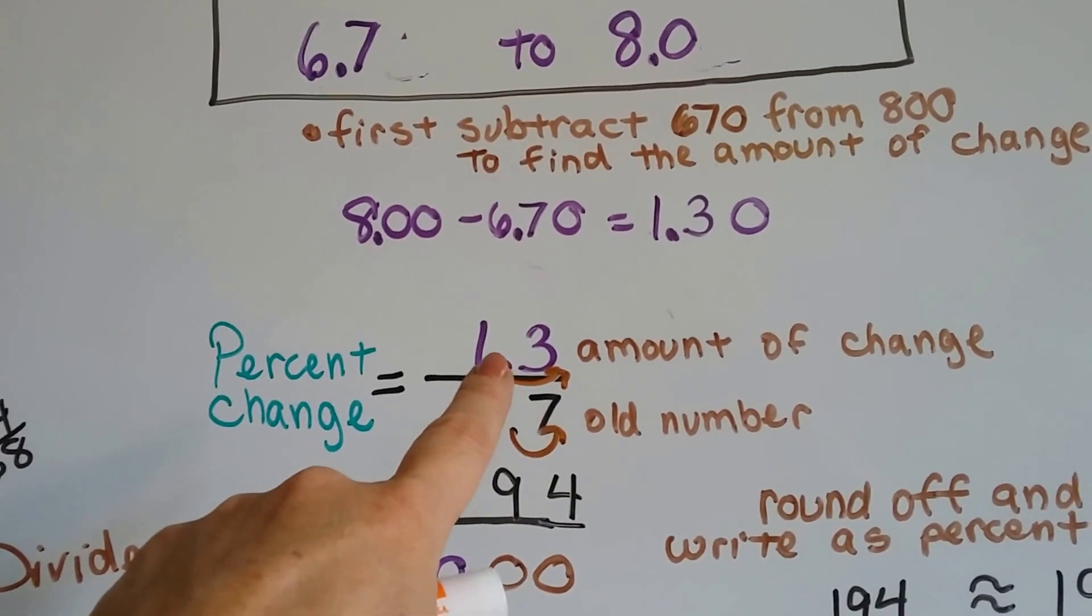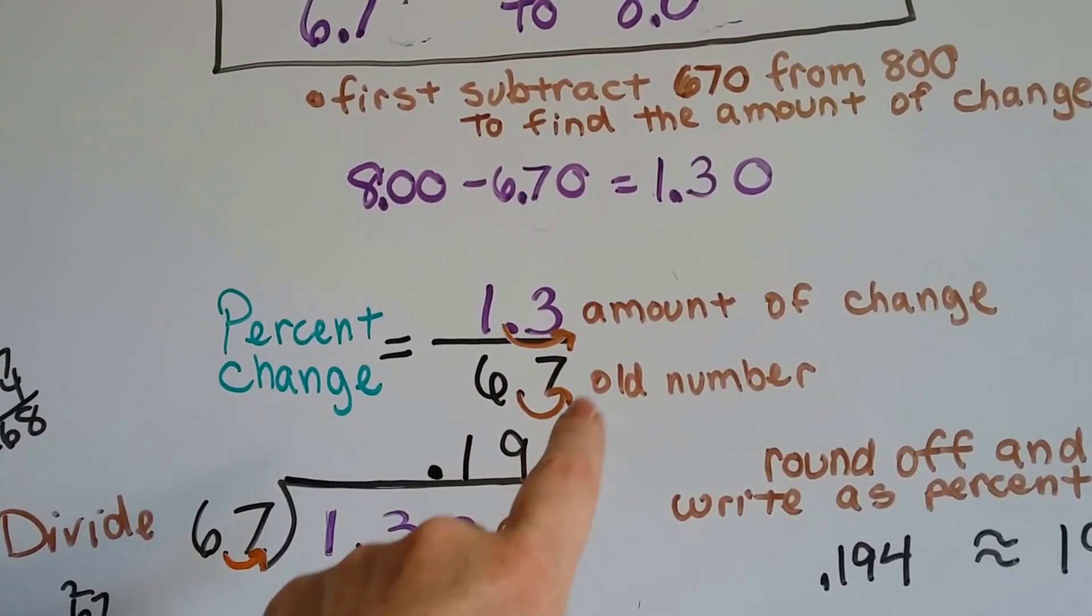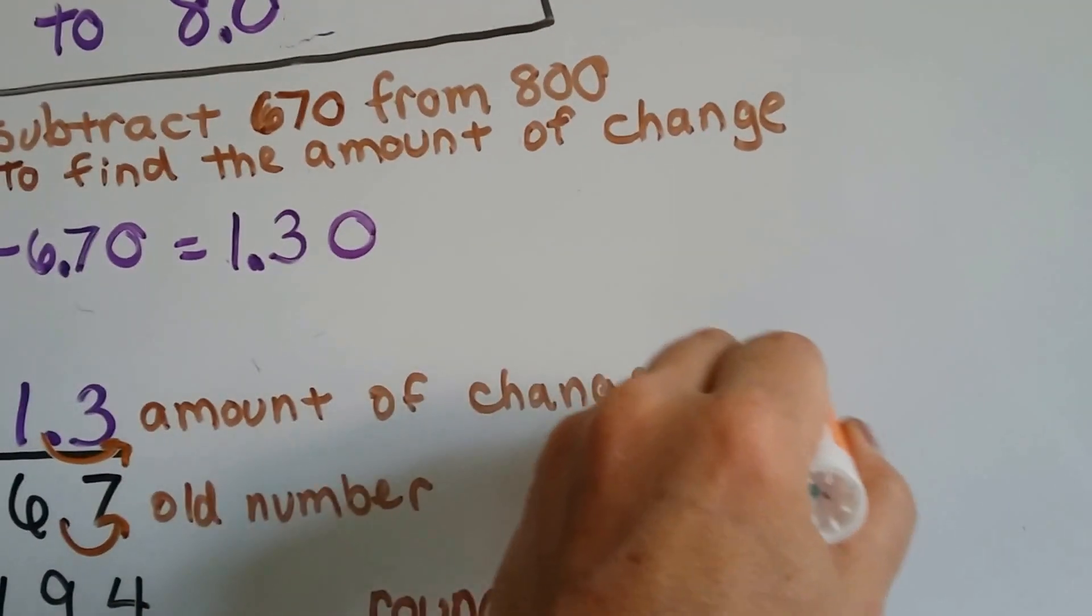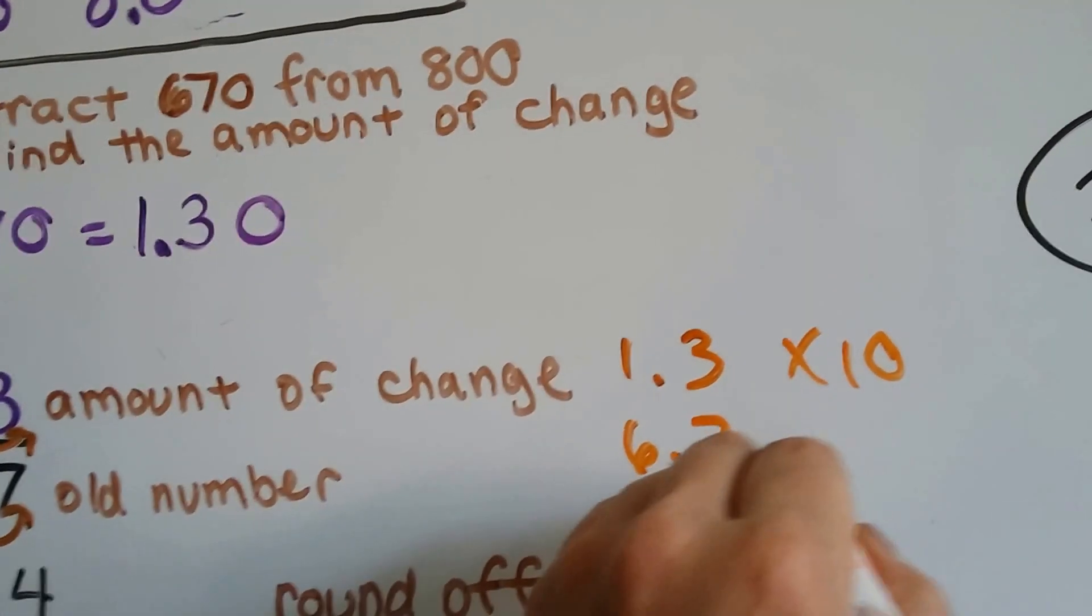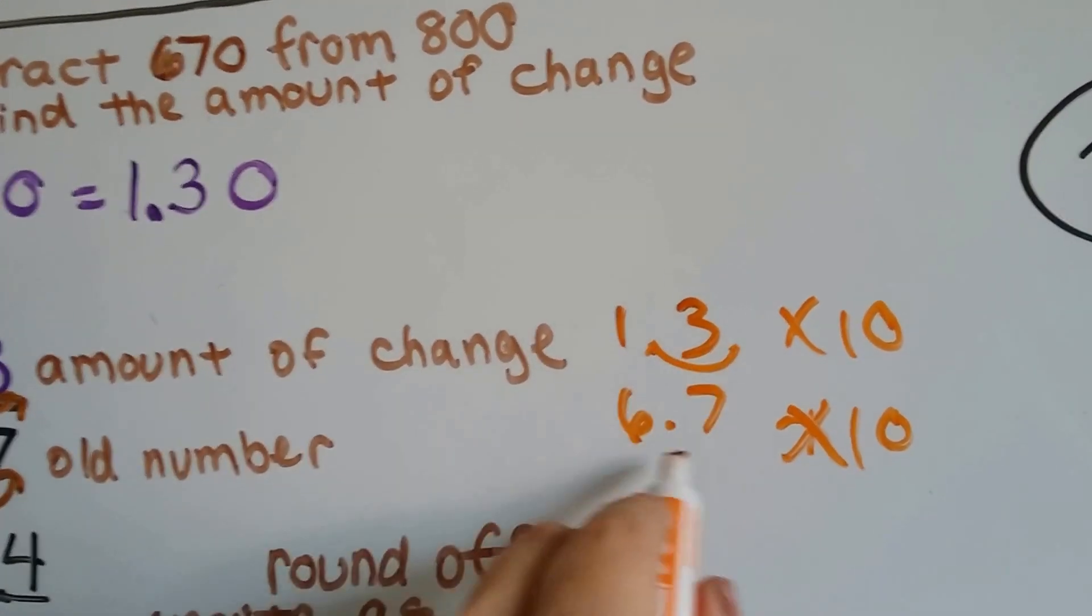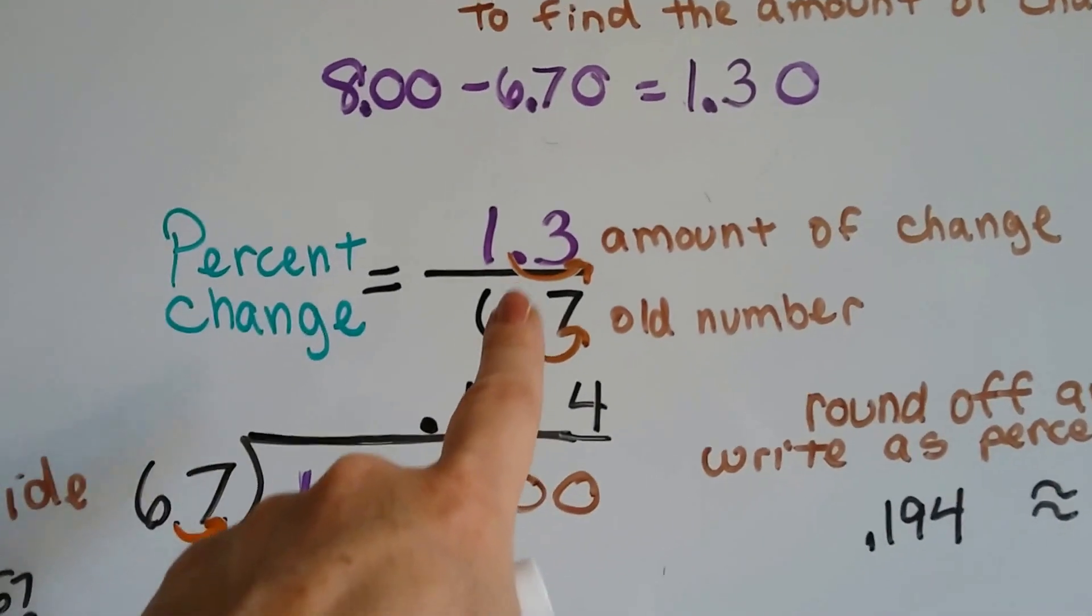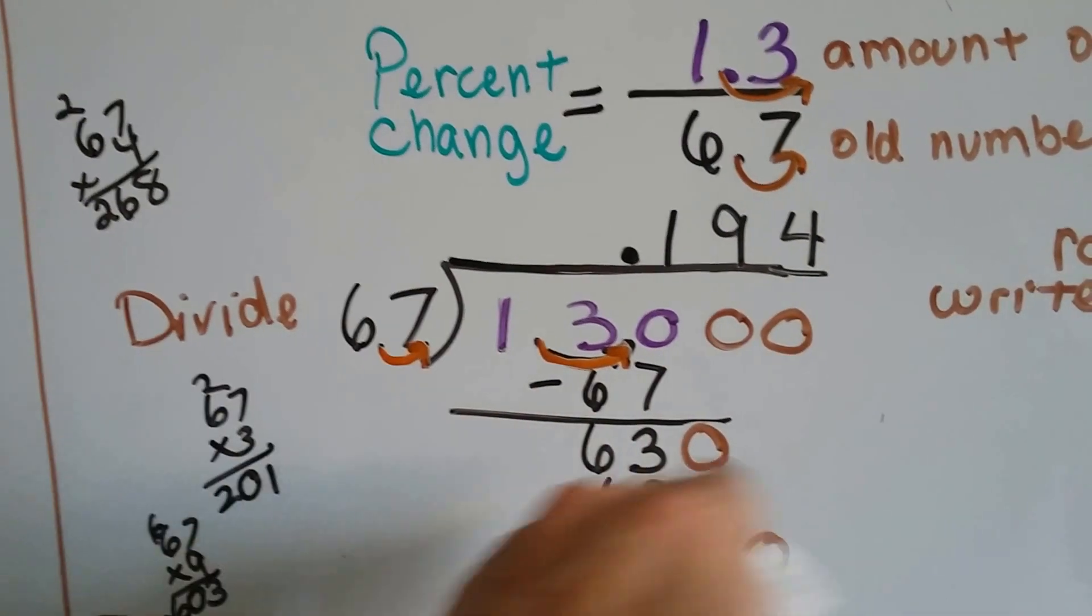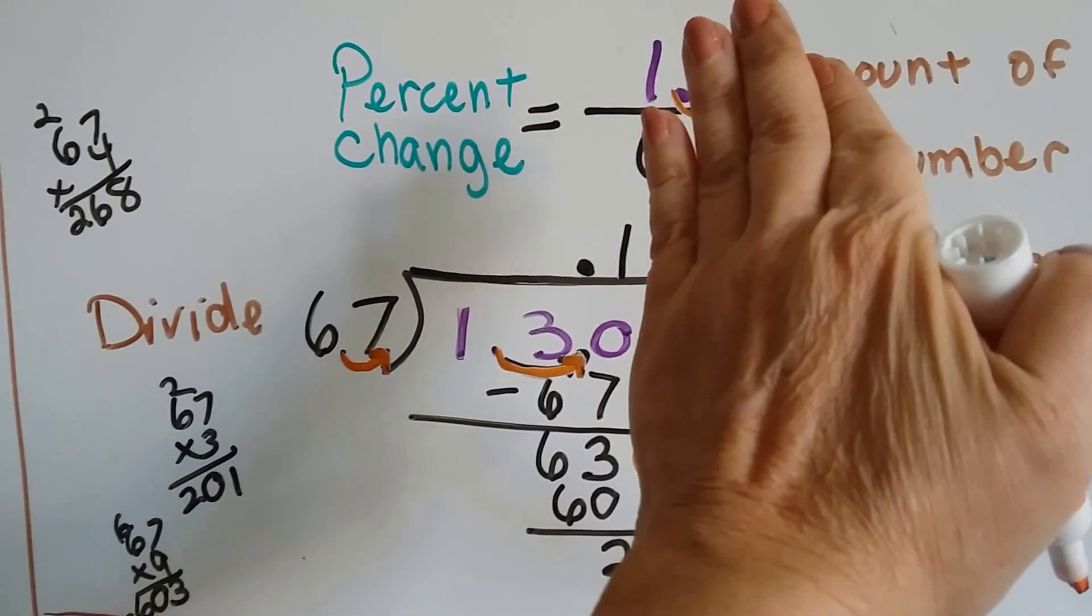We can just multiply the numerator and the denominator by 10, and move the decimal place over to the back of them. So instead of having 1.3 and 6.7, if we multiply both of them by 10, it's going to move that decimal point to back here, and we'll have a 13 and a 67. Now we're putting 67 into 13. Nope. Into 130.